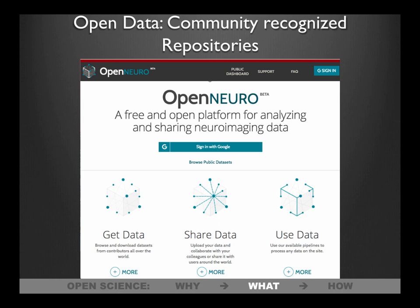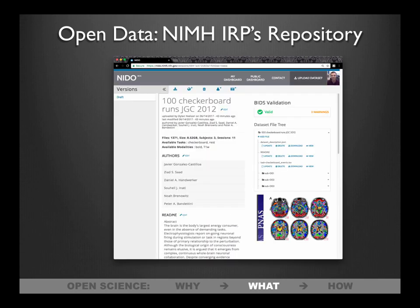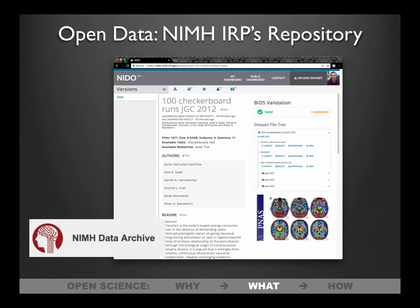OpenNeuro is a great new repository out of the Stanford group; it accepts neuroimaging data and anything in the BIDS format, and is entirely open and accessible — it does not require a data use agreement. We're also running a local version called NIDO, the NIMH Intramural Data Sharing Repository, accessible anywhere within the intramural program. My team can help you get data in. There's already a dataset there from Javier Gonzalez-Castillo — the hundred-runs dataset with three subjects — great for exploring fMRI processing techniques. Our repository is also affiliated with the NIMH Data Archive.